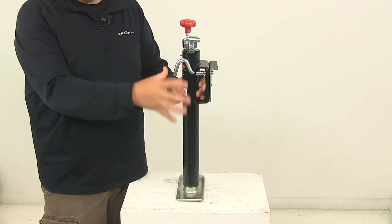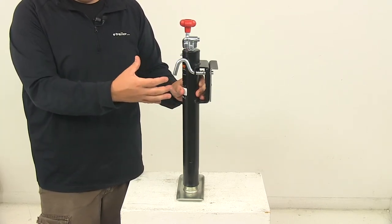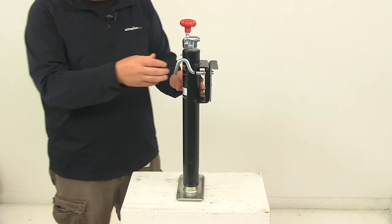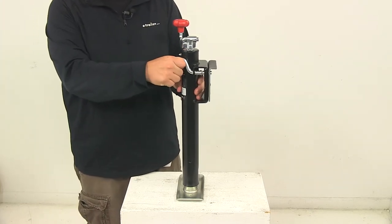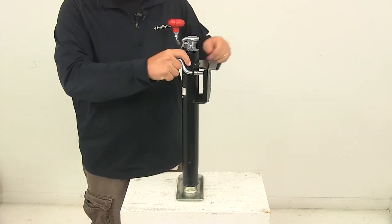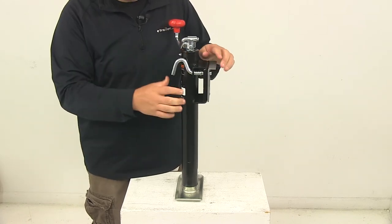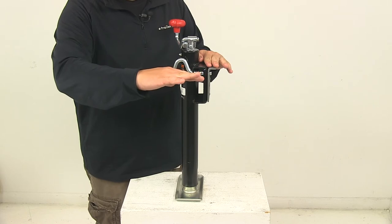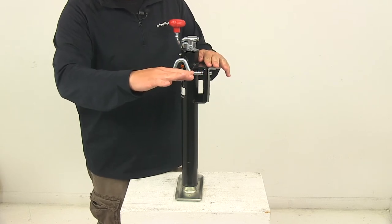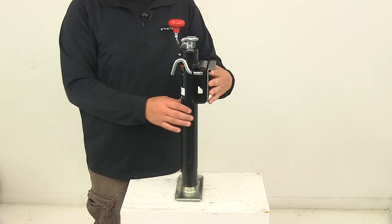It can easily rotate back down into an in-use position. It's got this plunger pin right here that's spring-loaded, so it's very easy to operate. That allows the unit to swivel, which would allow you to rotate the jack up parallel to the trailer frame when in travel and then back down into an in-use position.